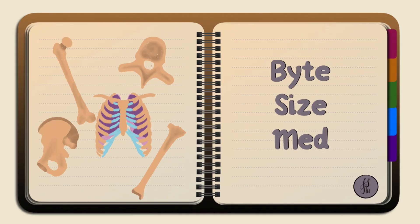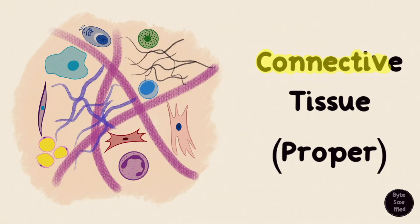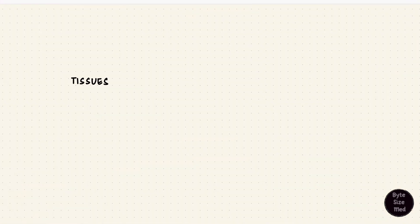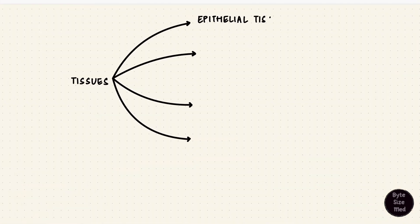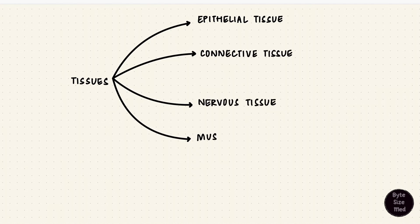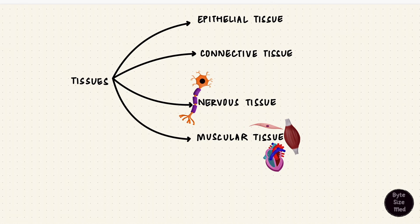Hello, welcome to Bite Size Med. This video is on connective tissue. There are four main types of tissue: epithelial, connective, nervous, and muscular. Of these, the most big and perhaps the least interesting one is connective tissue, but it is super important. It's what's in between all the other types of tissue, connecting them.